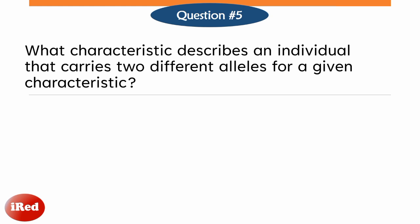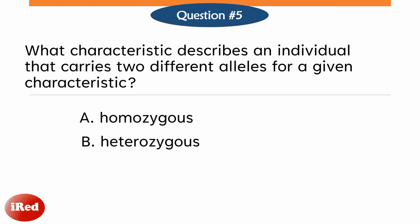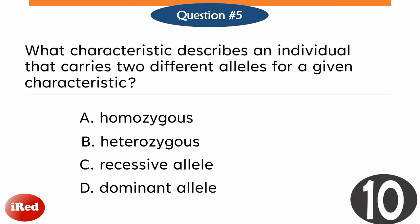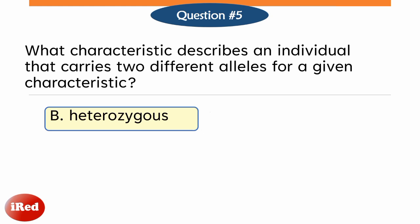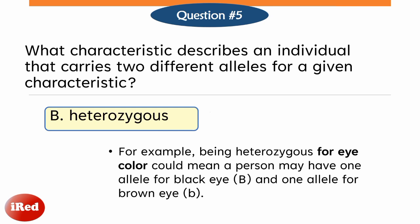Which characteristic describes an individual that carries two different alleles for a given characteristic? A, homozygous; B, heterozygous; C, recessive allele; or D, dominant allele? The correct answer is letter B, heterozygous. For example, being heterozygous for eye color could mean a person may have one allele for black eye and one allele for brown eye.